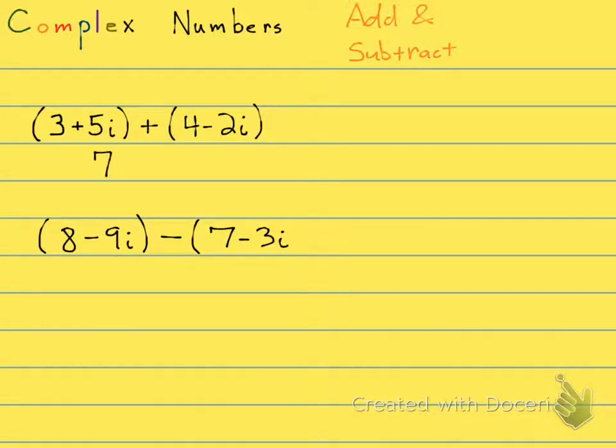And then we have 5i minus 2i, which is 3i. That's it. We're going to add the real number parts, and we're going to combine the imaginary parts.